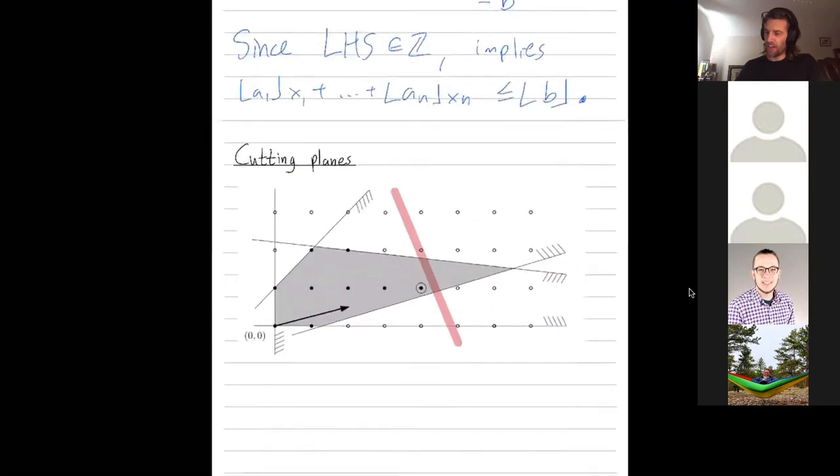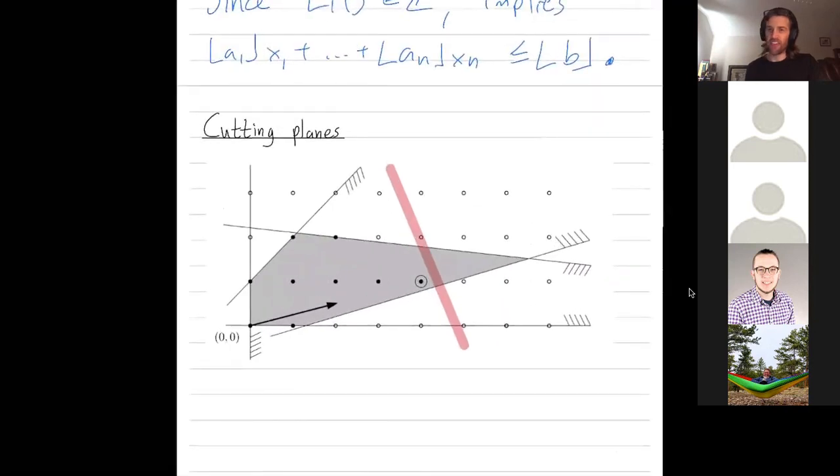So in summary, I introduced the Gomory method for cutting planes, which are a way to find new constraints to add to your linear programming problem, removing non-integer solutions, and then allowing you to get better bounds on integer linear programming problems just by solving arbitrary linear programming problems. Thanks, everybody.